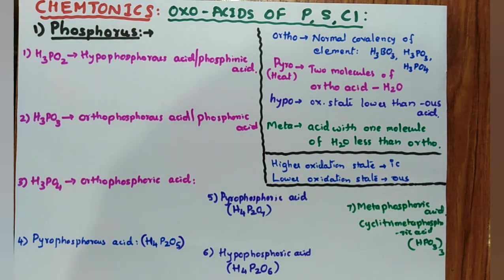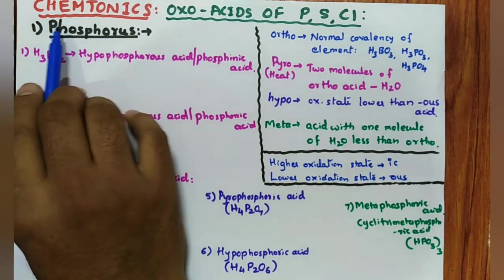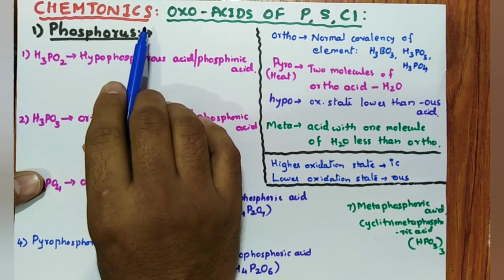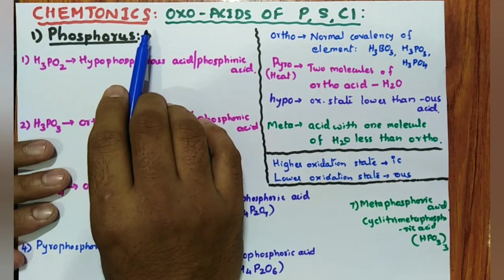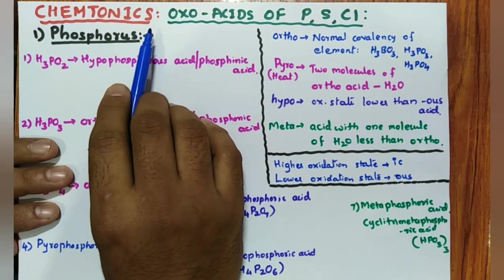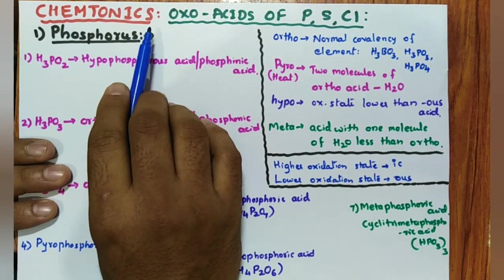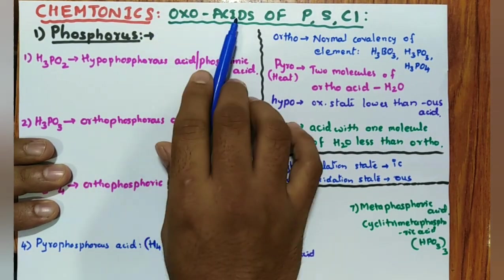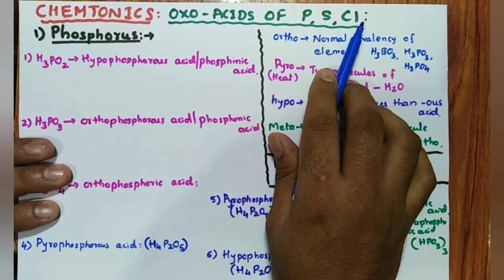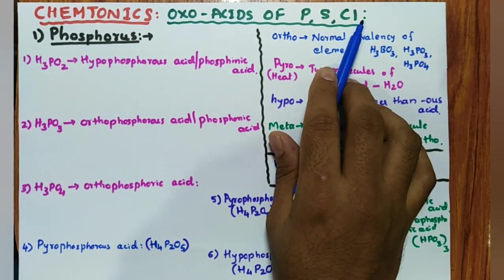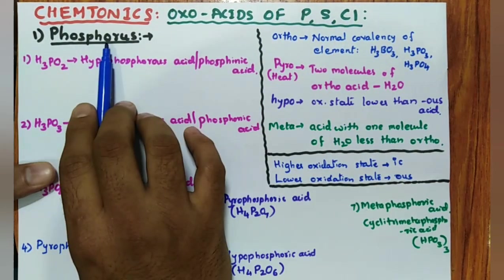Namaste friends, welcome to RH Chemistry. In today's Chemtonic series, I am going to discuss a very important concept for JEET and CET also — oxo acids of Phosphorus, Sulphur and Chlorine. So first we will see Phosphorus.